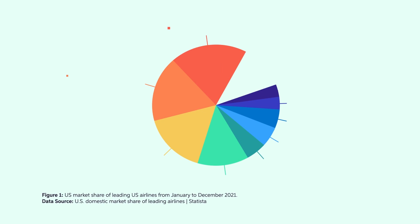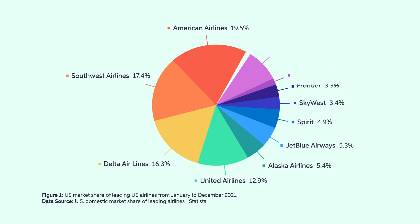Many industries are dominated by just a handful of companies. If you fly in the United States, you can choose your carrier, but only from a handful of airlines. Even so, the largest four airline companies equally share more than 66% of the entire market. Figure one shows these market shares.